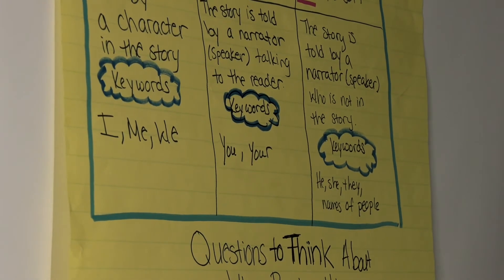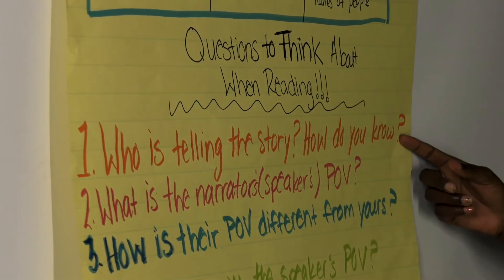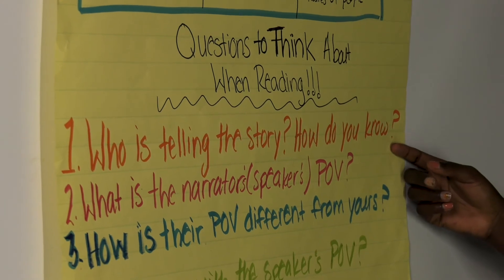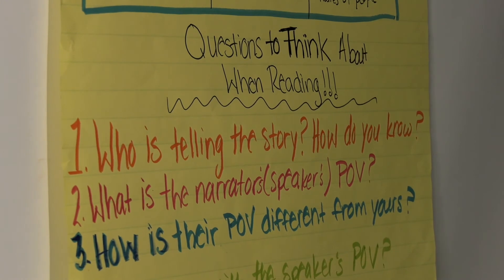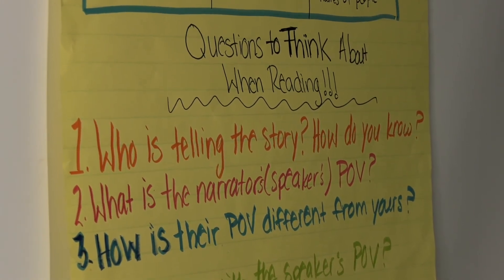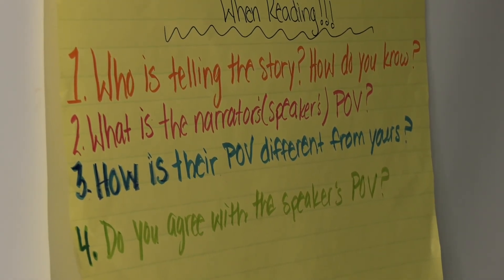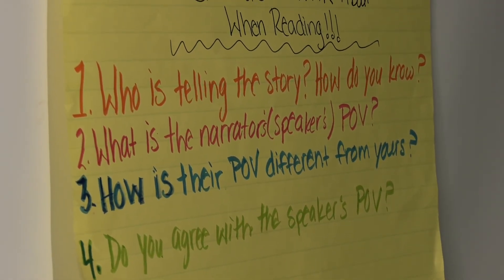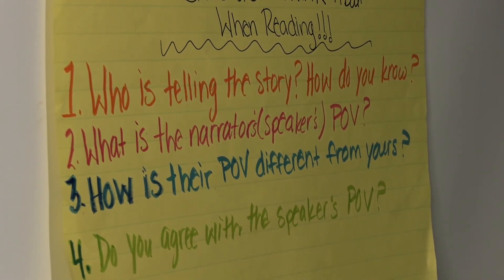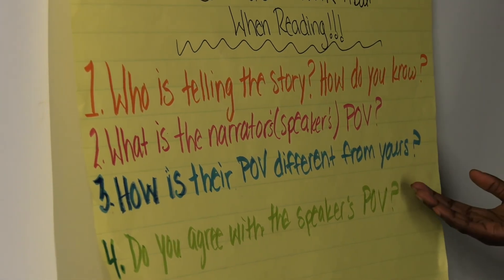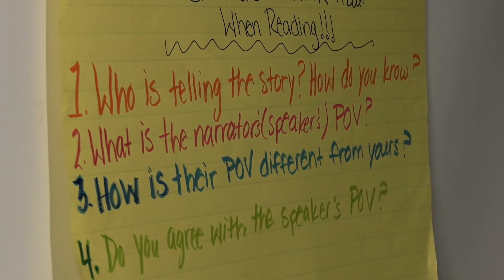Now, some questions that we need to think about when reading are: who is telling the story and how do you know? What is the narrator's — who is the speaker's — point of view? Is it first person, second person, or third person? Third, how is their point of view different from yours? So when you're reading, you also want to make connections to the text. How do you feel about the events that are happening in the story? Does it relate to the speaker's point of view? Does it relate to the character's point of view? It's important to make those connections.